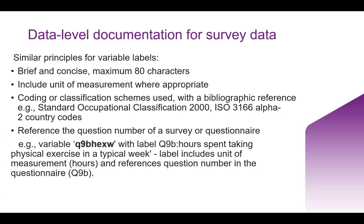Following the similar principle for variable names, the variable labels should be brief and concise — no more than 80 characters. Where applicable, they should use a unit of measurement, as we saw with one of the previous exercises. And again, if applicable, describe the coding or classification scheme that's used, including a reference — for example, the standard occupational classification 2000, SOC 2000, is the reference for what's used there for that variable.